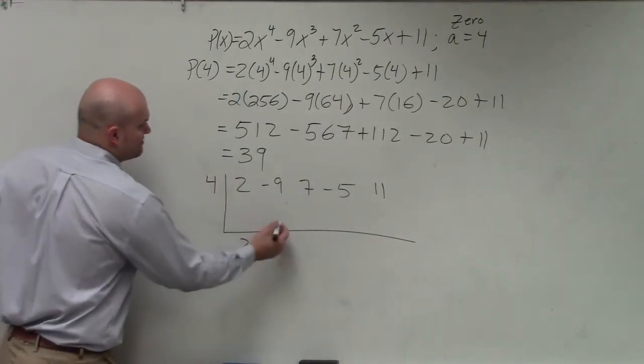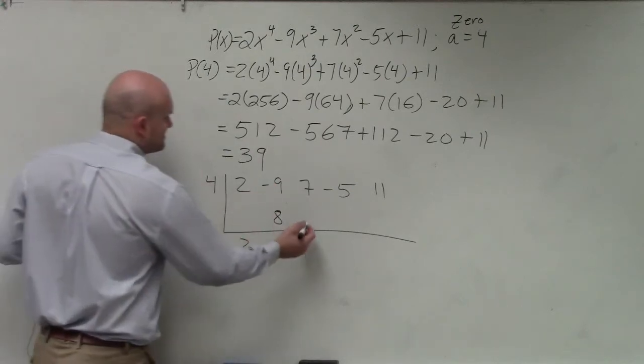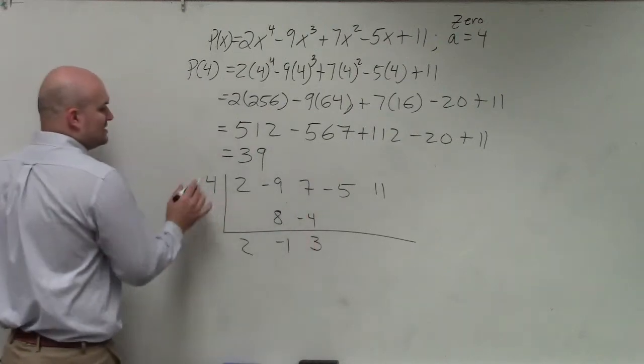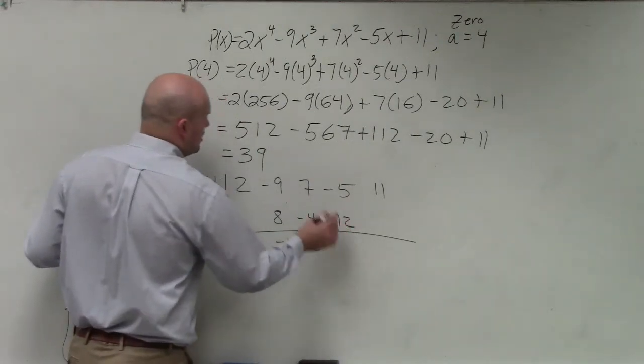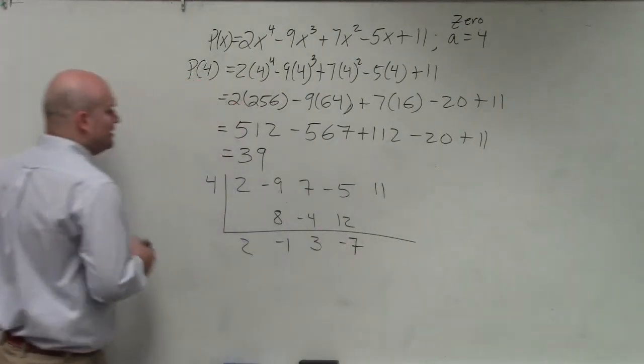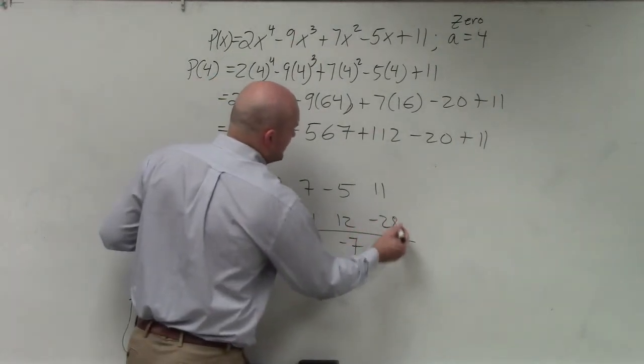Bring down the 2. 2 times 4 is 8. Negative 9 plus 8 is negative 1. Negative 1 times 4 is negative 4. 7 plus negative 4 is 3. 3 times negative 4 is positive 12. Negative 5 plus 12 is negative 7. Negative 7 times 4 is going to be negative 28.